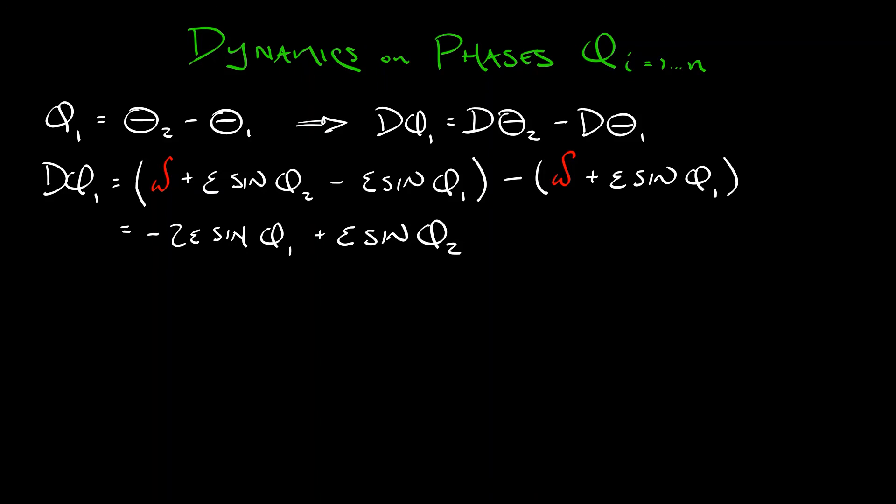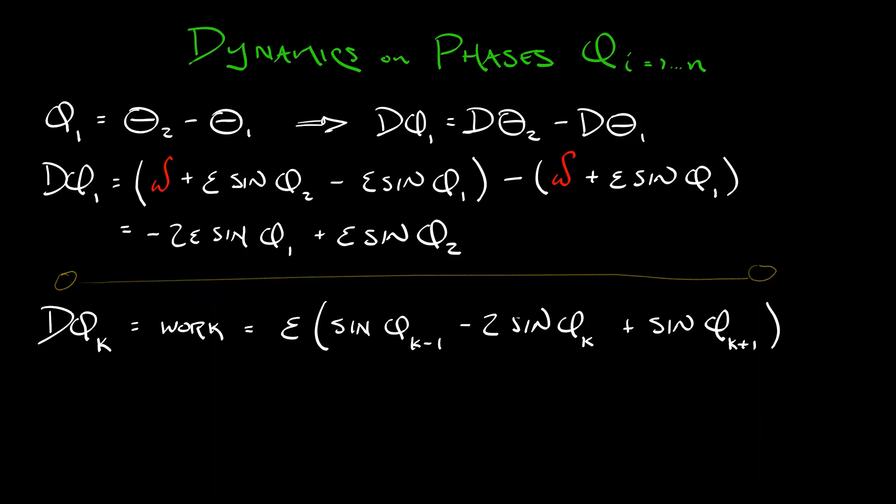Now that's a somewhat exceptional case because it's at the end point. In the interior, where you're looking at phi k, the difference between theta k plus 1 and theta k, the derivative of phi sub k is, with a little bit of work, epsilon times quantity sine phi k minus 1 minus 2 sine phi k plus sine phi k plus 1.